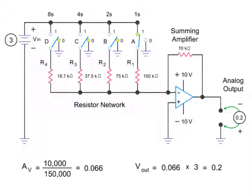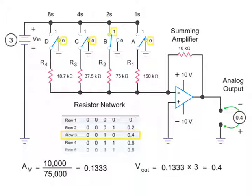Applying a binary of 0010 will move switch B to logic position 1, resulting in an input of 75 kilohms. Plugging these numbers in the equation gives a gain of 0.1333, resulting in an output of 0.4 volts when the input voltage is multiplied by the gain. Again, this result conforms to what is expected based on the truth table.